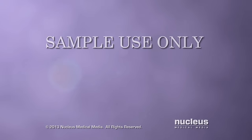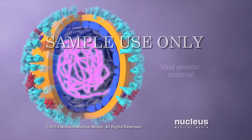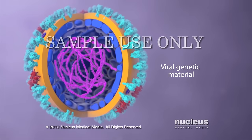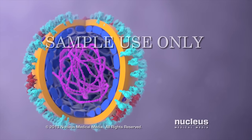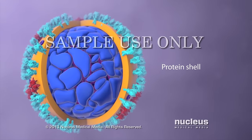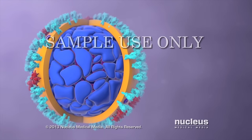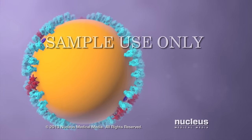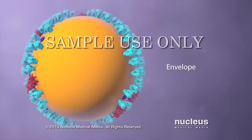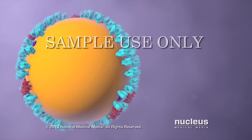The flu virus is extremely small and only visible through electron microscopes. Inside the virus, genetic material contains the information to make more copies of the same virus. A protein shell provides a hard, protective enclosure for the genetic material as the virus travels between the people or animals it infects. An outer envelope allows the virus to infect cells by merging with the cell's outer membrane.